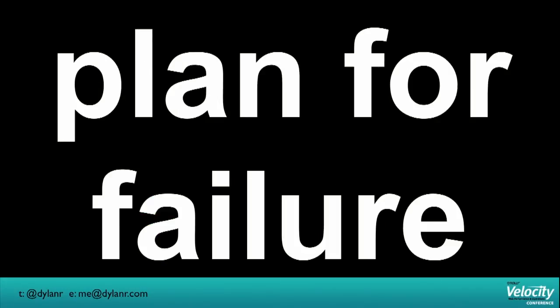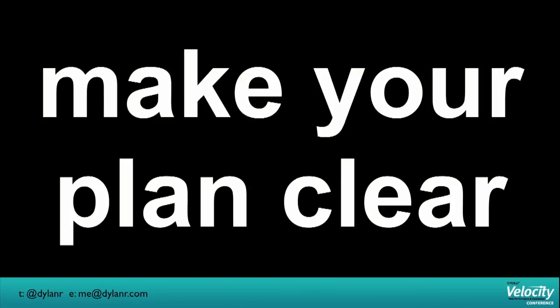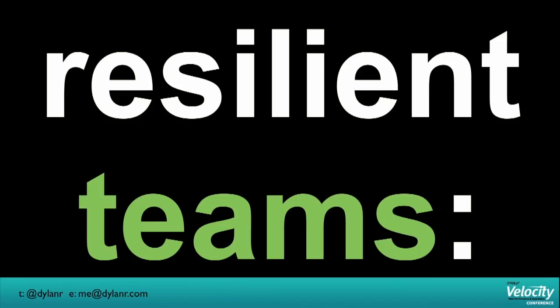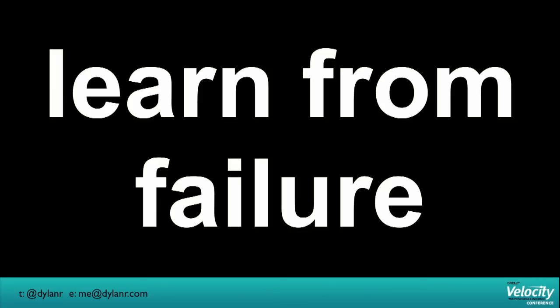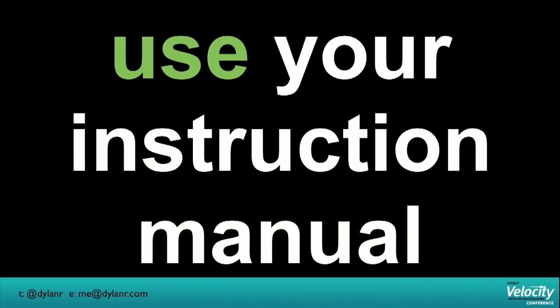To summarize: you want to build resilient apps. Plan for failure. Define the things that actually matter. Make your plan clear to your stakeholders — it's really hard to build that resiliency in unless everybody knows what it's for — and make sure that you fail to the things that matter. And then of course make sure that you have resilient teams. Practice failing. Learn from that failure — that's a key piece. If you just practice but don't actually learn from it, it was a waste of time. Take that, build your instruction manual, and use it. Constantly revise it, because things are going to fail in ways that you didn't anticipate, and you get to keep writing it so that you always have that to go back to. Awesome. Thanks. I am going to be around — hit me up.